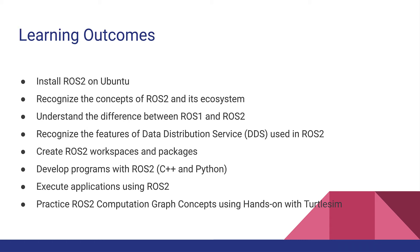At the end of the course, you will be able to recognize the features of ROS2, such as the DDS — the Data Distribution Service — and its design goals. You will be able to install ROS2 Foxy on Ubuntu 20.04 using Debian and the Mac operating system. You will recognize the fundamental concepts of ROS2 and its ecosystem, understand the differences between ROS1 and ROS2, recognize the features of the Data Distribution Service used as middleware in ROS2, and learn how to create ROS2 workspaces, packages, and develop programs in both C++ and Python. Finally, you will practice ROS2 computation graph concepts using hands-on activities with Turtlesim.